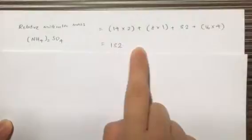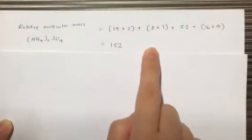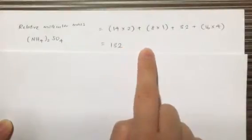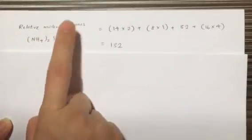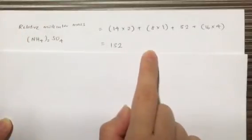Relative molecular mass has no units, so we do not write any units. Units is only written when we are calculating the molar mass. So once more, take note: relative molecular mass has no units.